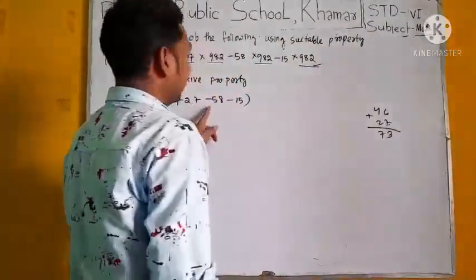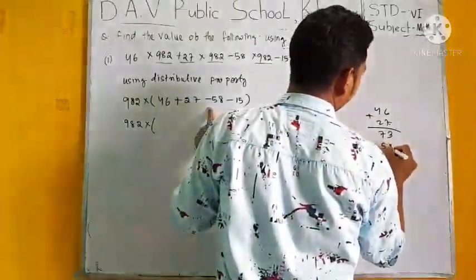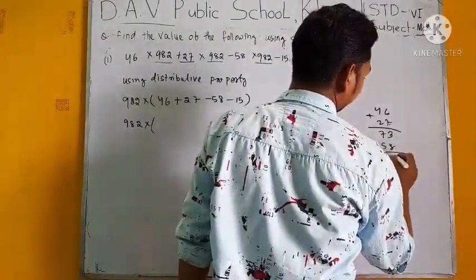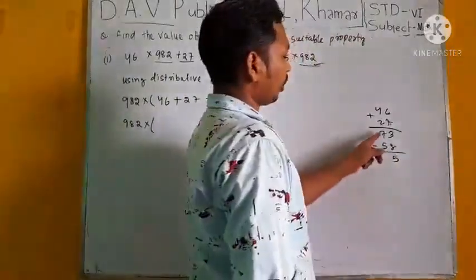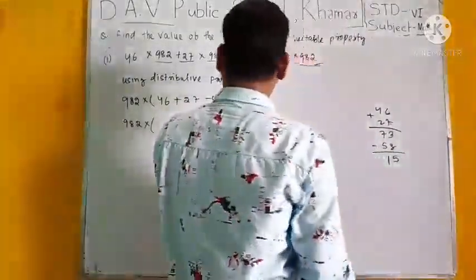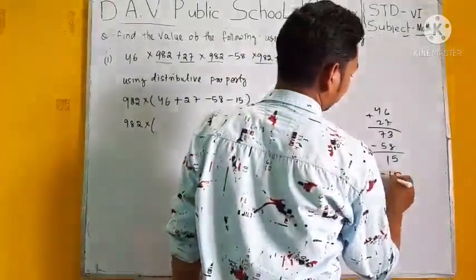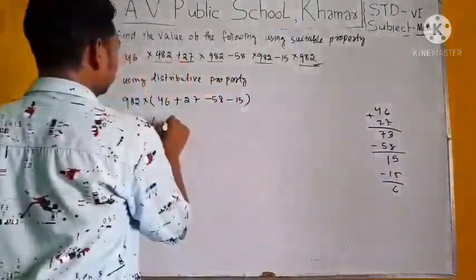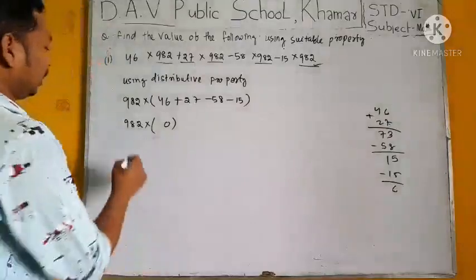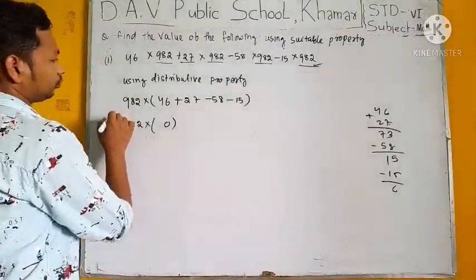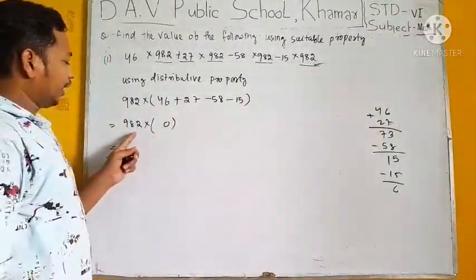Minus 58, minus 15. That is equal to 982 into 0 equal to 0.